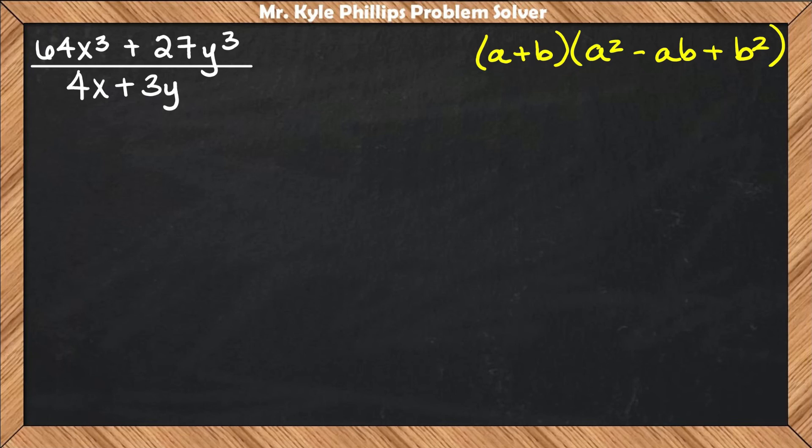I'll take the cube root of 64x³, which is 4x. This is a, and b is the cube root of 27y³, which is 3y.